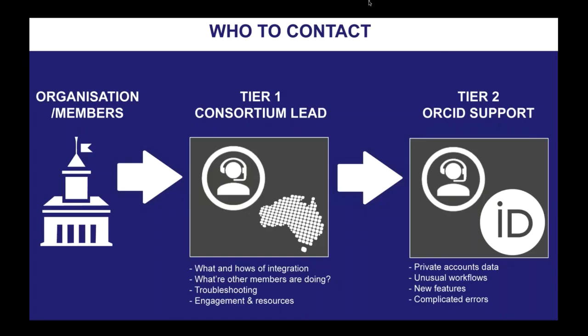What do you do and who do you contact? Member institutions would get in touch with us as tier one consortium lead. The questions we would answer include how to do the integration, what sort of integration you're looking at, and what other members are doing. We'll help you troubleshoot technical issues, and if you want resources on how to engage with your researchers, we'll provide links or help you develop them. We will escalate matters about accounts or data that's private between a researcher and ORCID directly to ORCID.